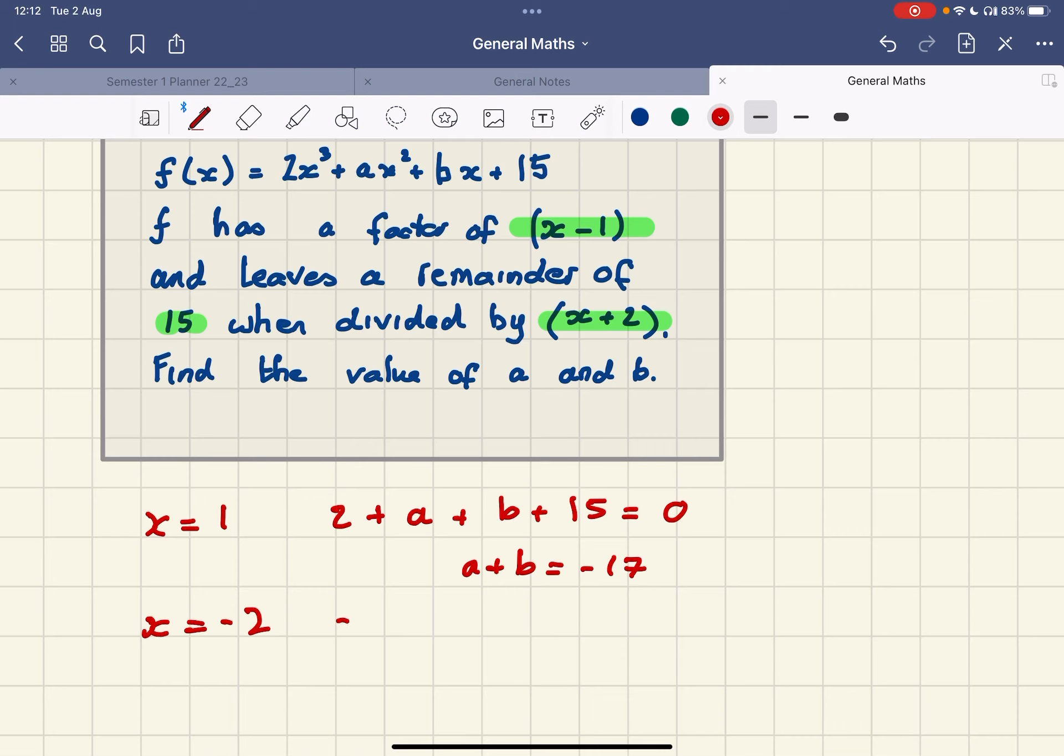I'm going to have 4a and take away 2b add 15.